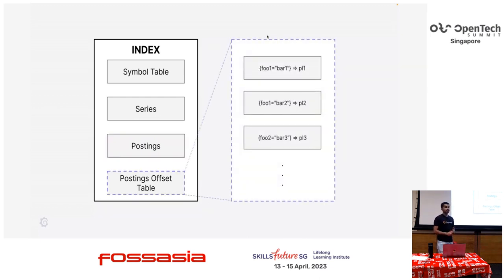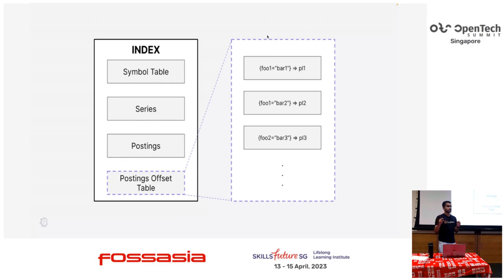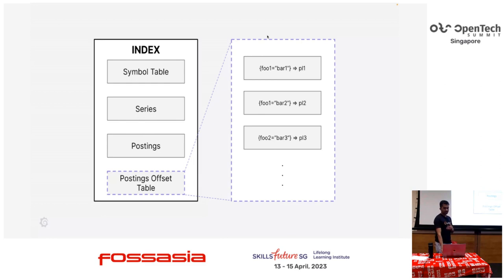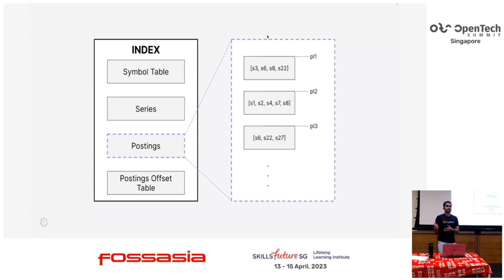There is a posting offset table — this is the important part. Every series has a set of label name and label value pairs. In this posting offset table, we store: foo1 equals bar1 is present in a set of series represented by posting list 1; foo1 equals bar2 is present in this particular set of series. This is how we store the inverted index — for every label name and label value pair, we store what set of series corresponds to this. This just points to a posting list as a reference, and based on PL1, PL2, PL3, we can look at this table to get the actual set of series for this label name and label value.